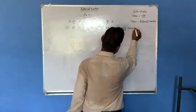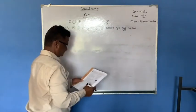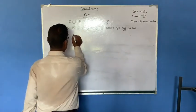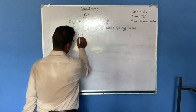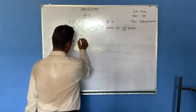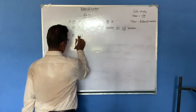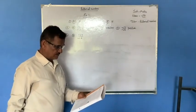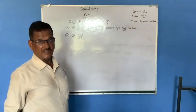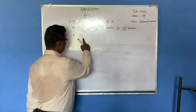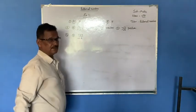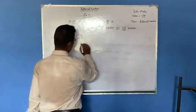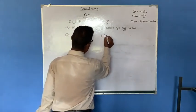Now question number three: reduce the number into lowest form. First question: 124 by minus 16. To convert into the lowest or reduced form, you divide the numerator and denominator by their HCF. So find the HCF of 16 and 124.